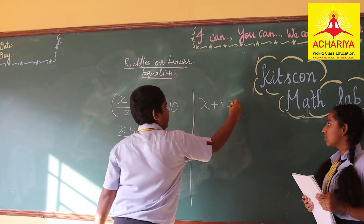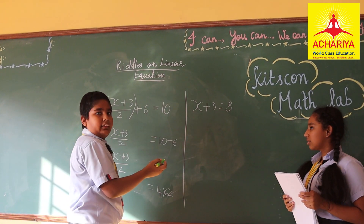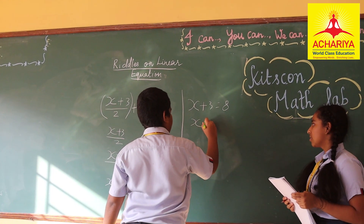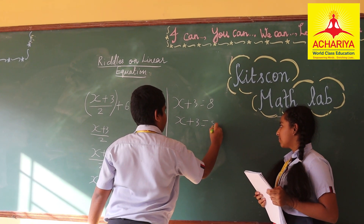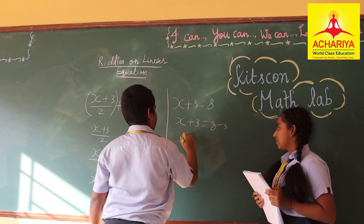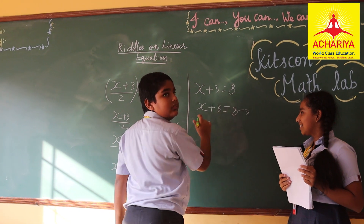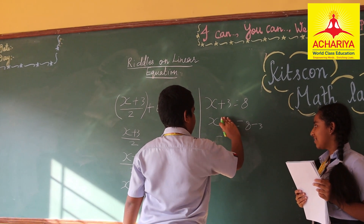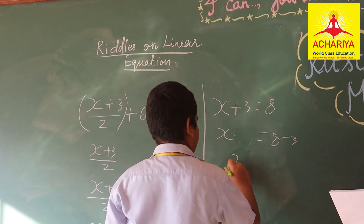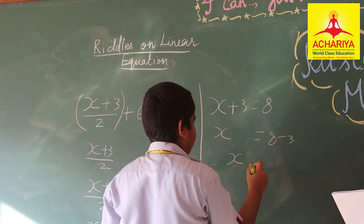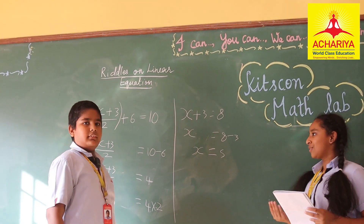4 into 2 is 8. If I send plus 3 to the right side, it will become minus 3. So X equals 8 minus 3. The number you thought is 5. Yes, it's 5.